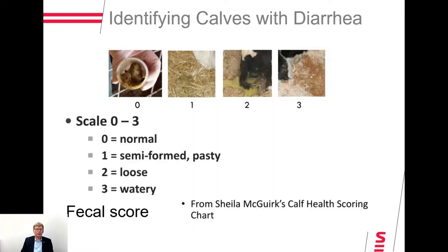What are we looking at when we have calves with diarrhea? First of all, let's look at the diarrhea score. The score of zero is normal. One is semi-formed or pasty. Two is loose. And three is watery. This chart is borrowed from Sheila McCurk, who is a real guru when it comes to calf health and neonatal diseases. She has devised a very nice app specifically for iPhones, so if you're interested, please Google Sheila McCurk and try to find her app.